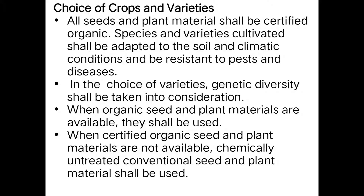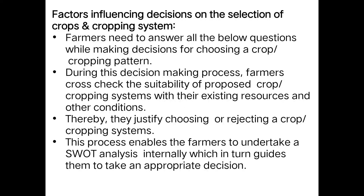The next important point covers the factors influencing the decision on selection of crops and the cropping system. When selecting a particular crop and cropping system under organic farming, there are certain factors affecting the decision-making process. The farmer needs to answer all the relevant questions while making decisions for choosing a crop or cropping pattern.